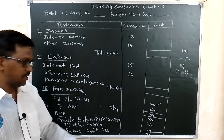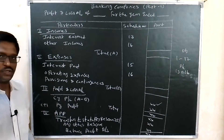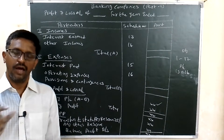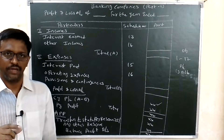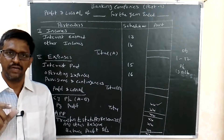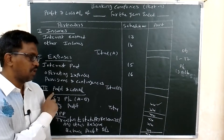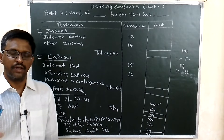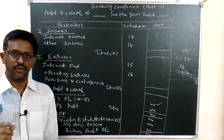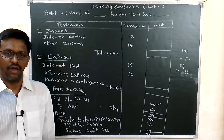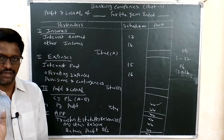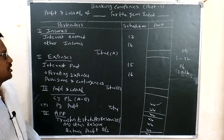To recap the profit and loss format: incomes are Interest Earned (Schedule 13) and Other Incomes (Schedule 14). Expenses are Interest Paid, Operating Expenses, and Provisions and Contingency. Then comes profit — A minus B — plus previous year profit, giving the total. Appropriation: 25 percent transfer to statutory reserve, any other reserve, and the balance transferred to the balance sheet.